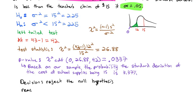And the reason for that decision is that the p-value is less than the alpha value, or that 0.0337 is less than the 0.05.